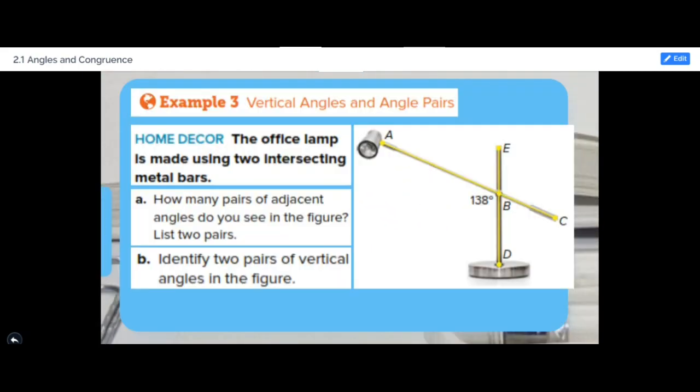Let's look at this example. The office lamp is made using two intersecting metal bars. How many pairs of adjacent angles do you see in the figure? List two pairs.